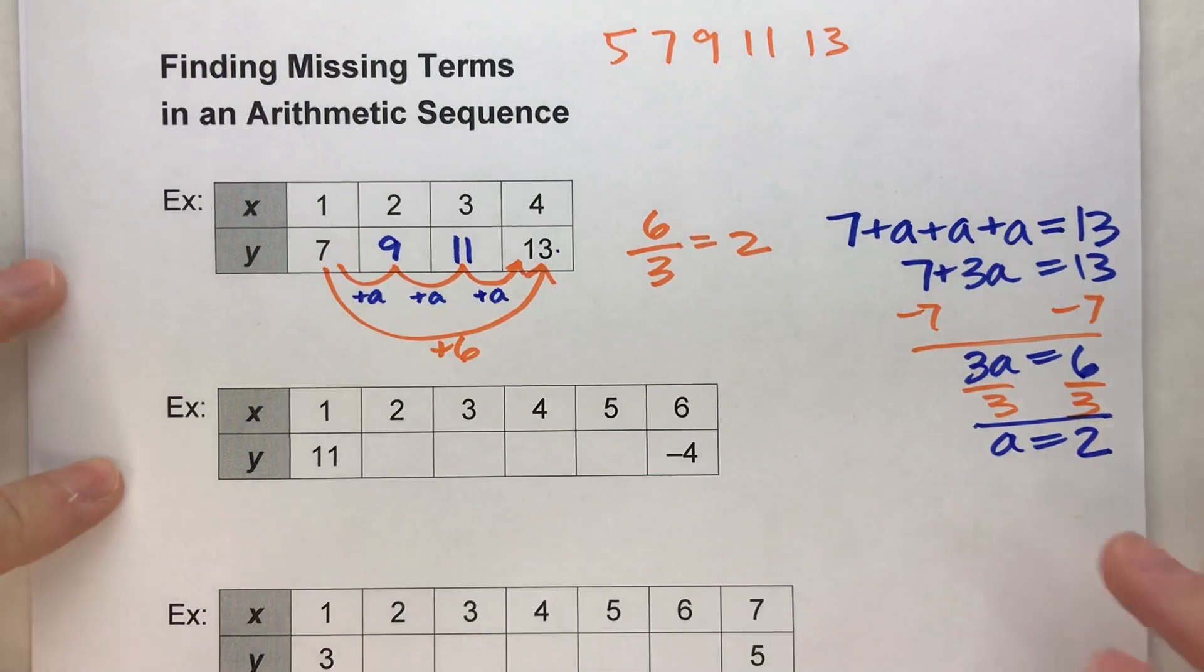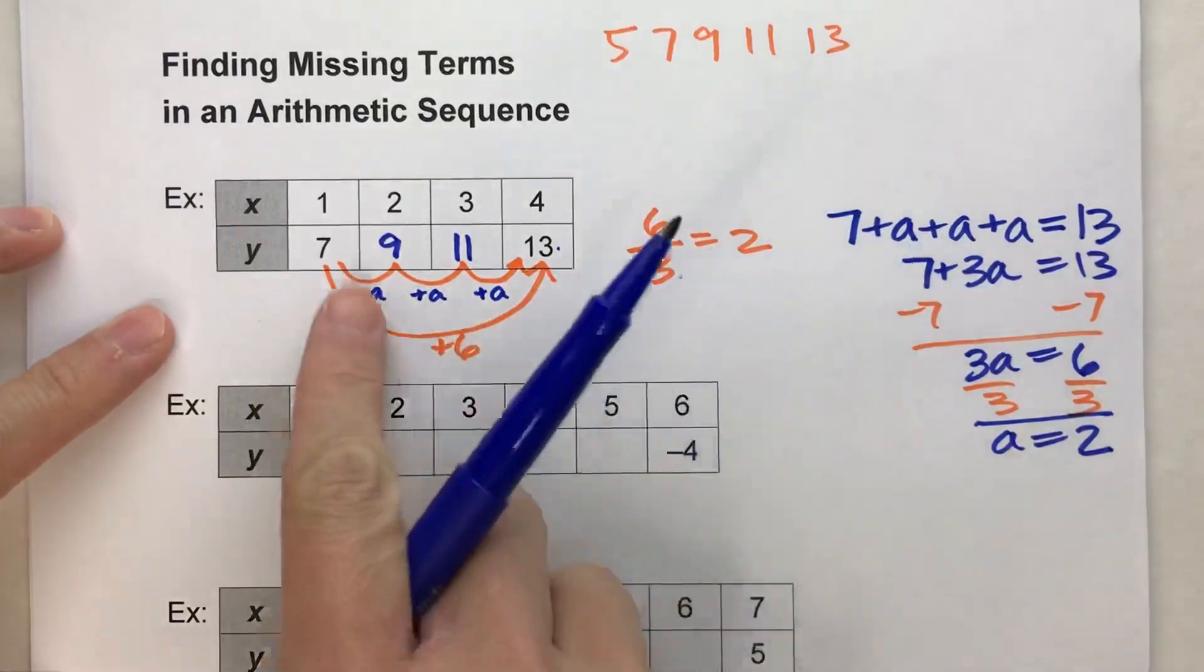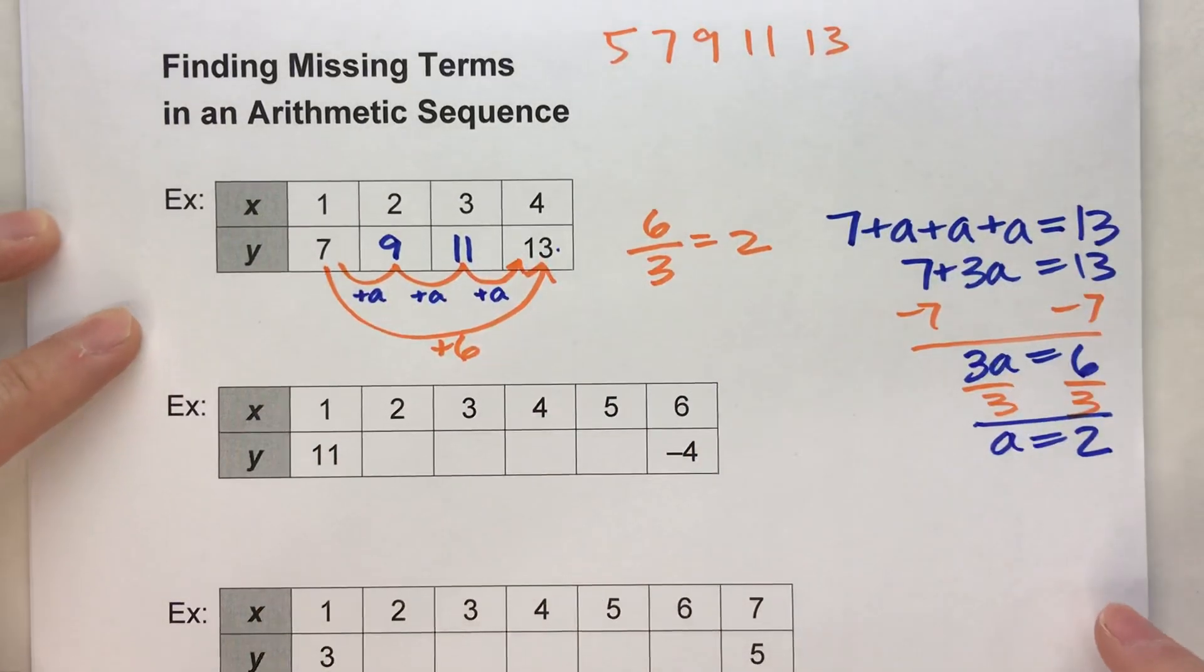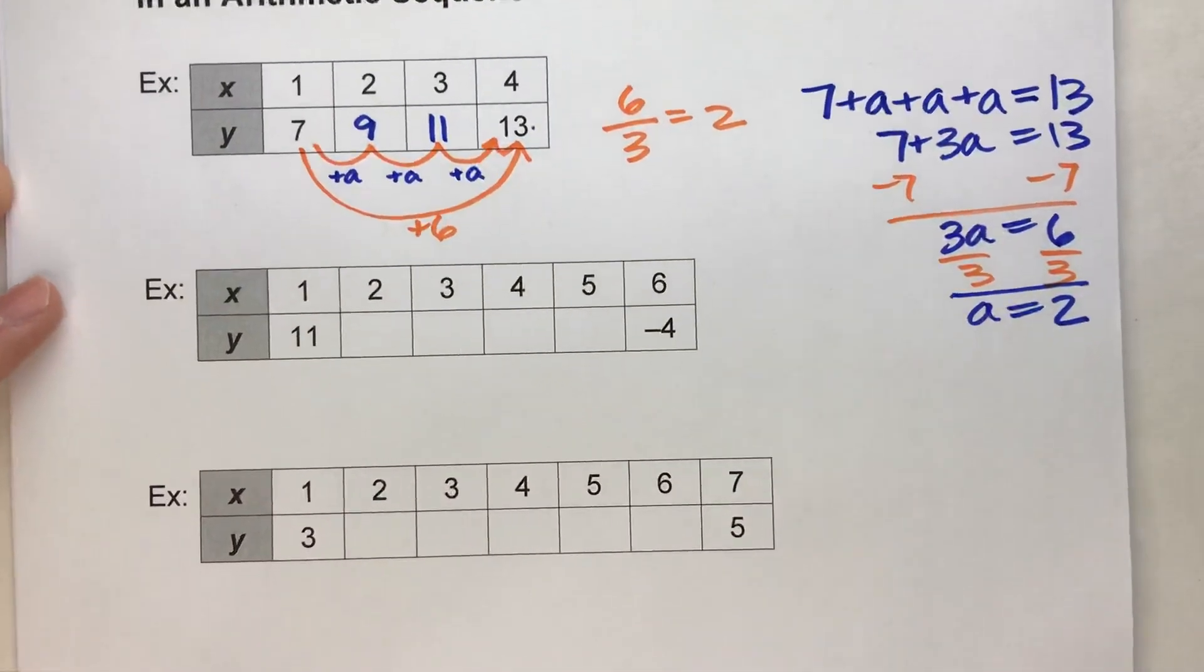And look, 6 divided by 3 gets you 2. So we could have figured out that it was going up by 2 this way also by setting up an equation. Now, depending on how you think about it, some people can intuitively figure this out, and some people like to have the equation. So there's two different methods to do it.